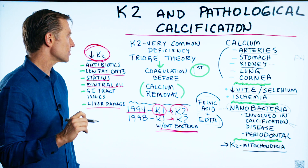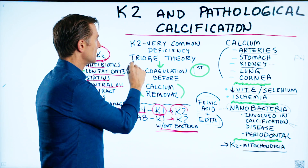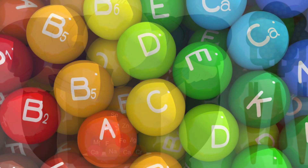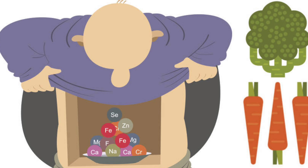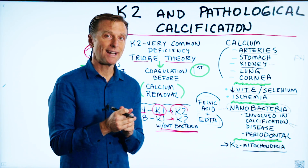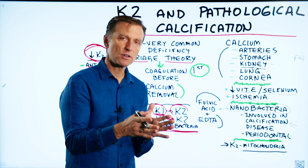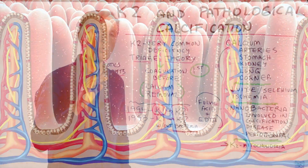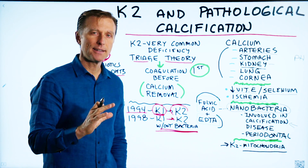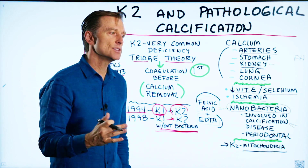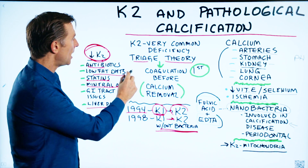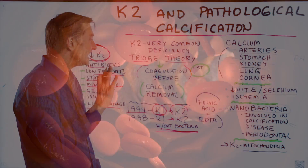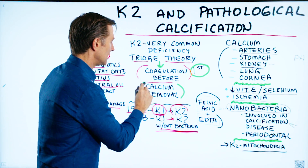There's another important point. Professor Bruce Ames developed something called the triage theory. If you have a subclinical vitamin deficiency — meaning you have some of the vitamin but not the full required amount — the body will ration out what it has only for actions involving short-term survival, and will not allocate that nutrient for functions that don't involve short-term survival. So with a subclinical deficiency of vitamin K1, the body will allocate it to coagulation first — stopping broken blood vessels or internal bleeding — before any is allocated to calcium removal.